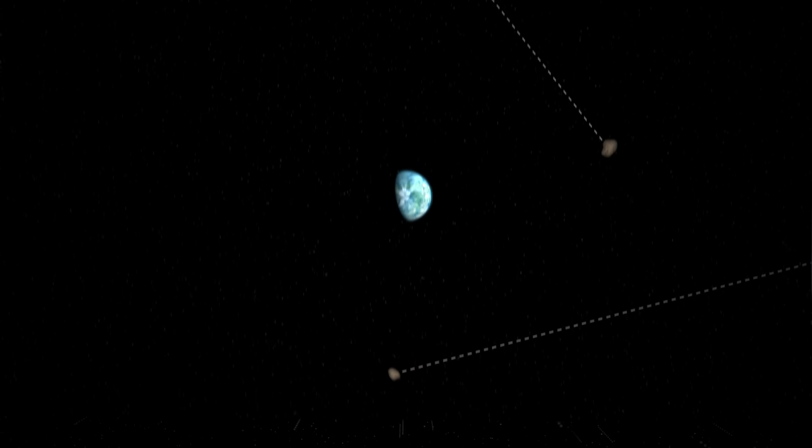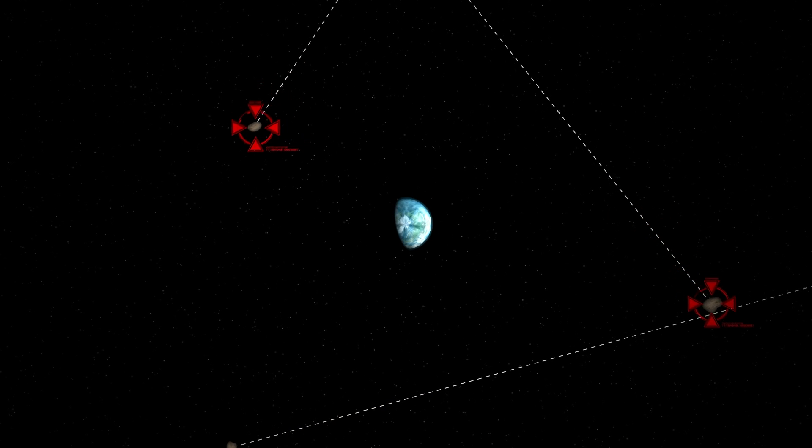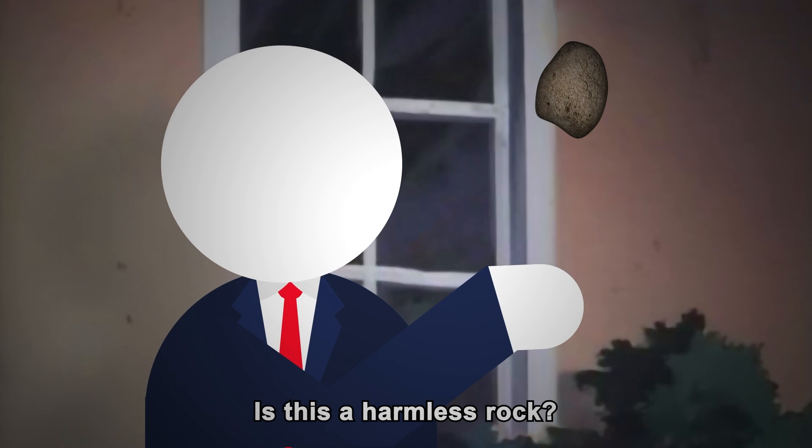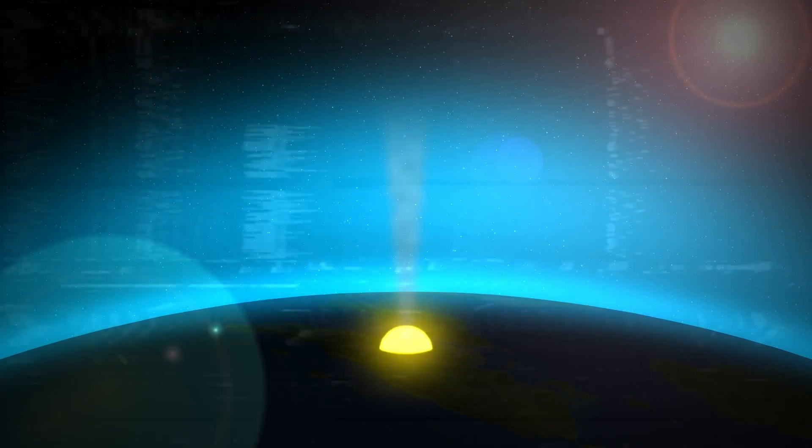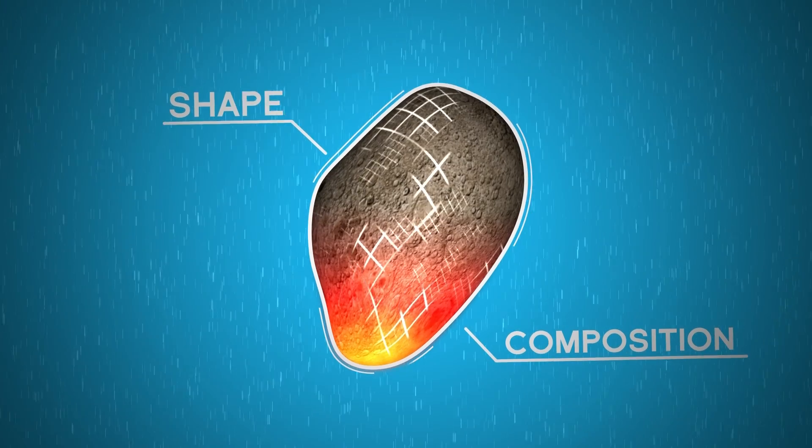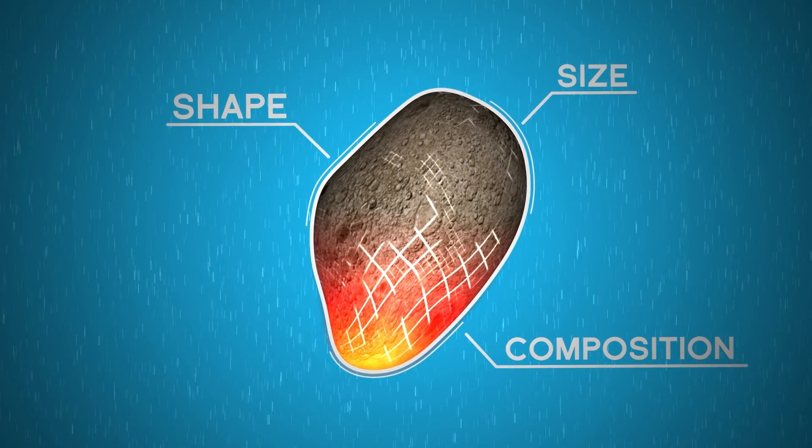It's obviously in our best interest to keep track of them, even though certain authority figures don't quite seem to get it. Let me explain. The deadliness of a meteorite impact depends on the asteroid's composition, its shape. But the biggest factor is its size.